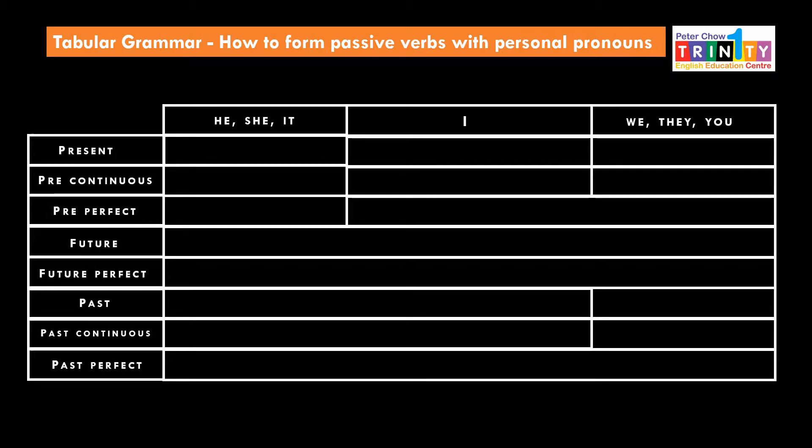On the top you can see the seven subject pronouns: He, She, It, I, We, They, and You.